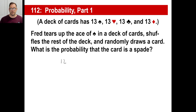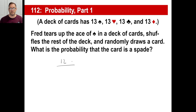The definition of probability is the outcomes that you want divided by the number of outcomes that are possible. Now that he has thrown out the ace of spades, there are no longer 52 cards in the deck — there are 51. So the total possibilities you have now are 51. That's your probability: 12 out of 51 — that you're going to draw a spade.